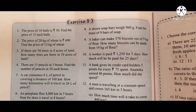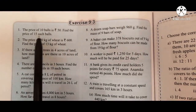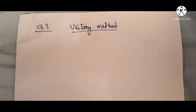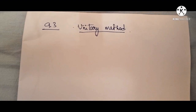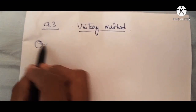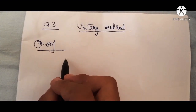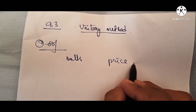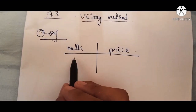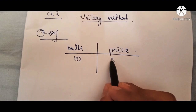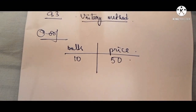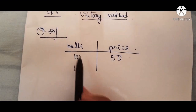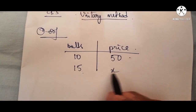So here we will do exercise 9.3, question number 1. The price of 10 bowls is rupees 50, find the price of 15 such bowls. We will make two columns — one for the bowls and one for the price. So here 10 bowls cost rupees 50, and we need to find the price of 15 such bowls.